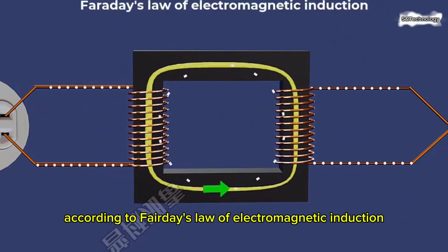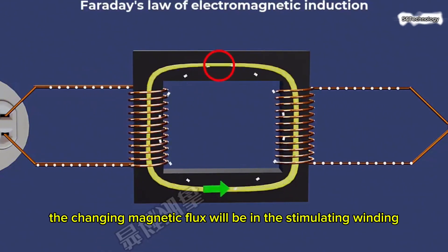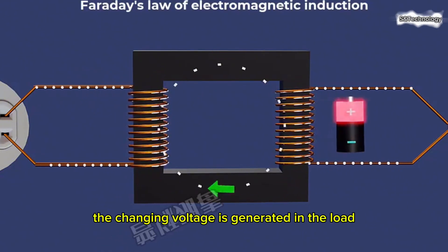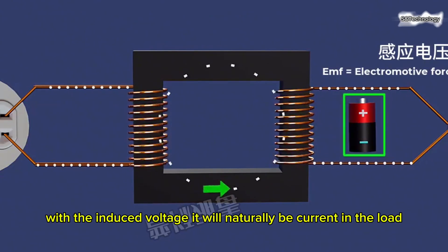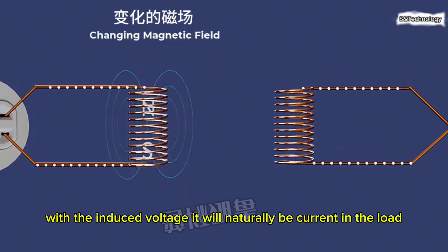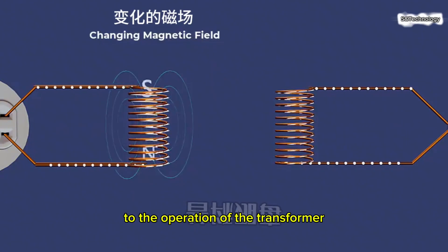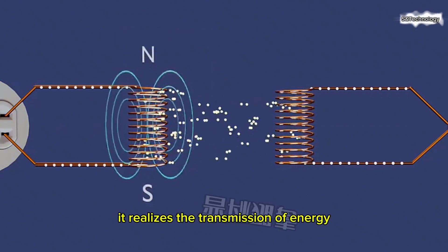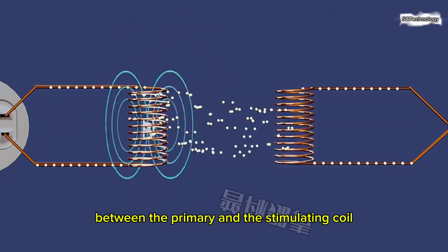According to Faraday's Law of Electromagnetic Induction, the changing magnetic flux will generate changing voltage in the secondary winding and the load. With the induced voltage, there will naturally be current in the load. It can be seen that the changing magnetic field is the key to the operation of the transformer. It realizes the transmission of energy between the primary and the secondary coil.